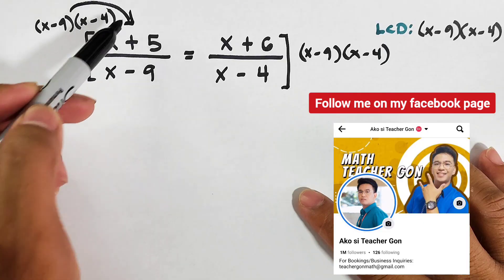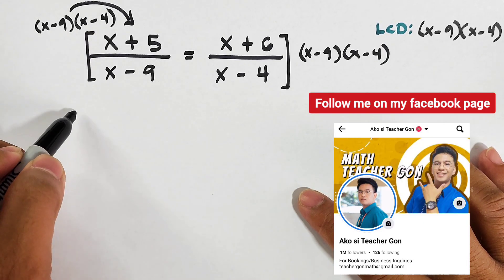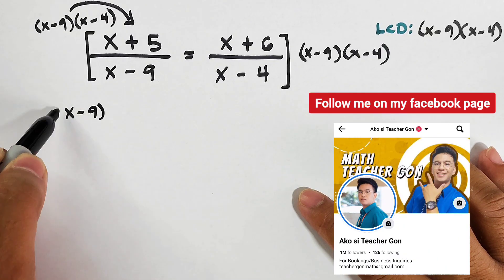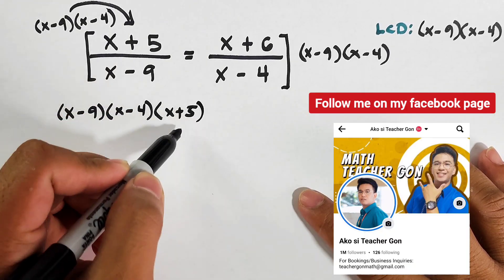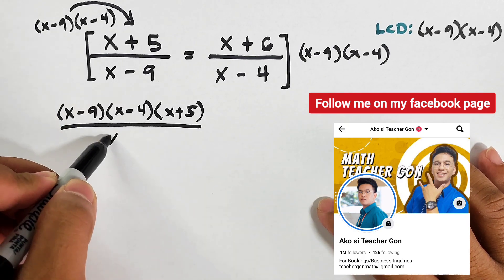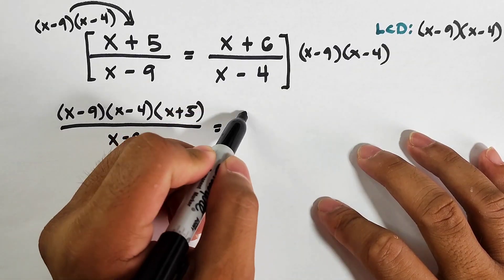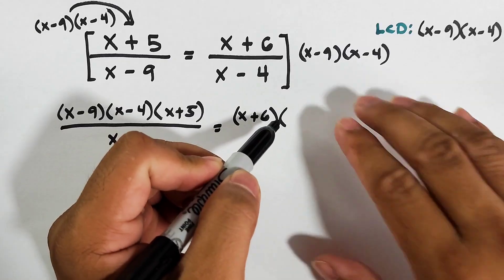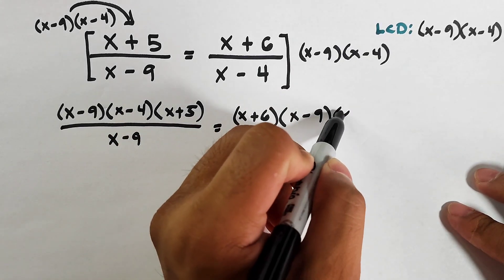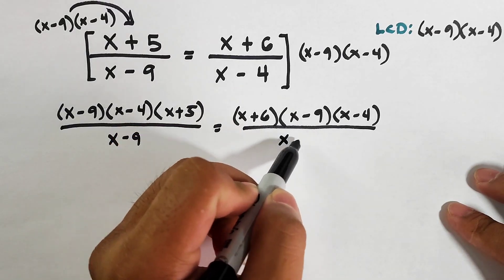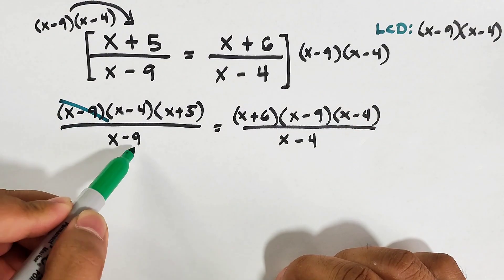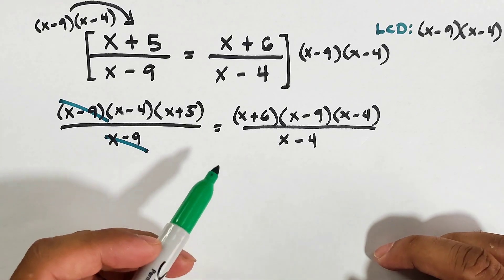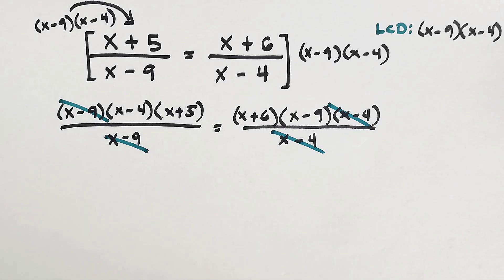What we have is x minus 9 times x minus 4 times x plus 5 over x minus 9, and on the other side x plus 6 times x minus 9 times x minus 4 over x minus 4. As you can see, we can simplify factors that are the same from the numerator and denominator. We can cancel them out, and we don't have a denominator anymore because it's already eliminated.